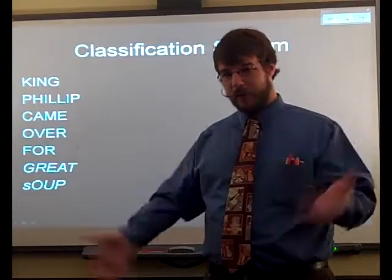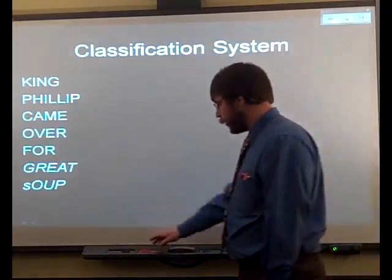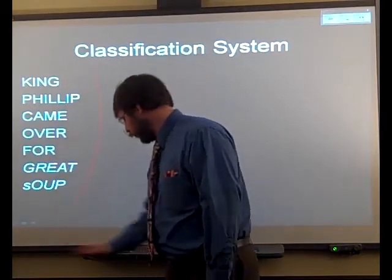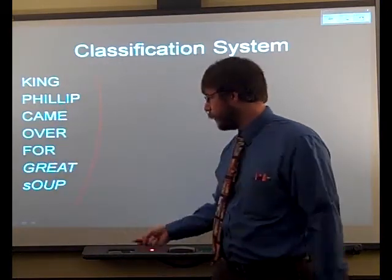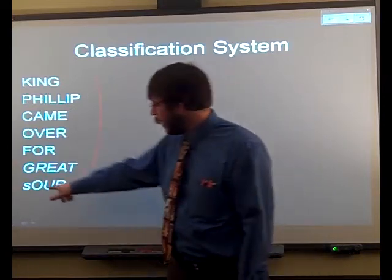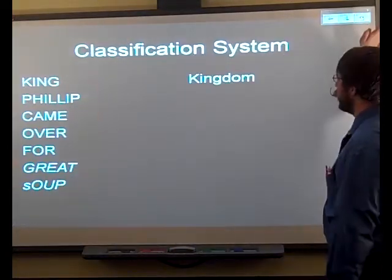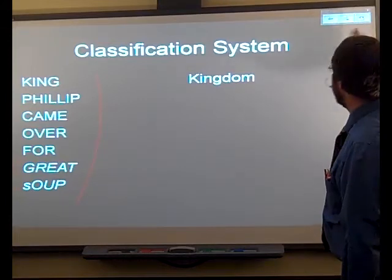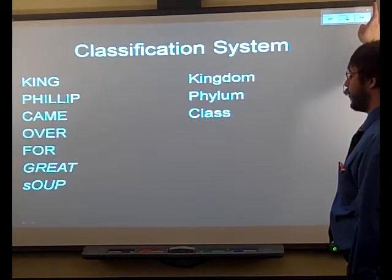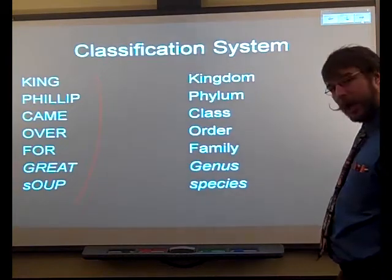So we have this whole classification system that Linnaeus came up with. You can remember it using the mnemonic: King Philip came over for great soup. Notice that 'great' and 'soup' are in italics, and the S on soup is lowercase — there is a reason for that. The K is for kingdom, then phylum, class, order, family, genus, and species.